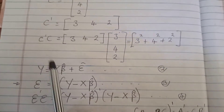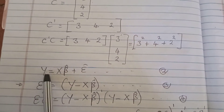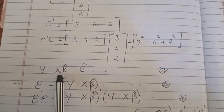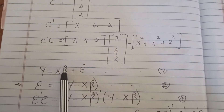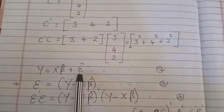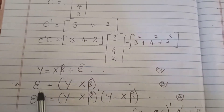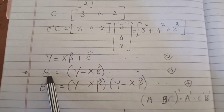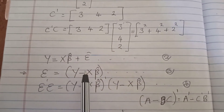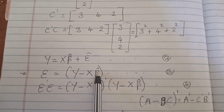Let's begin. This is the regression equation: y equals X multiplied by beta plus epsilon. When you rearrange this, you find that epsilon equals y minus X times beta.